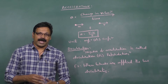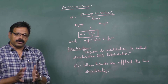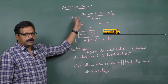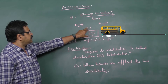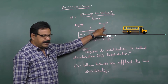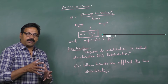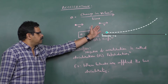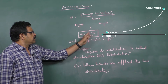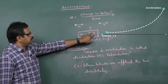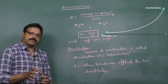We are going to look at acceleration. According to its definition, acceleration is the change in velocity of a body per unit time. If a body starts with an initial velocity u, and after a time t it acquires a final velocity v — for example, by operating an accelerator in an automobile the velocity increases — then v is greater than u. The change in velocity is v minus u, divided by the time t, so acceleration is defined as change in velocity per unit time.